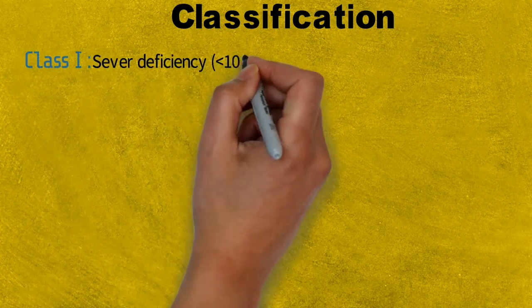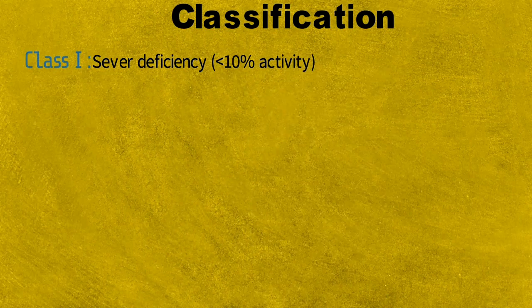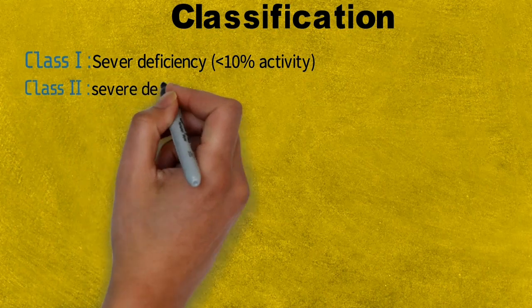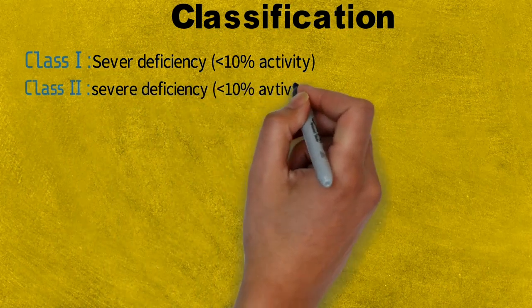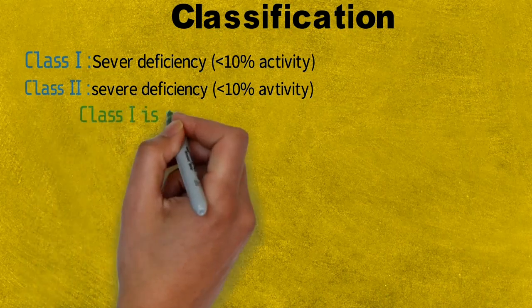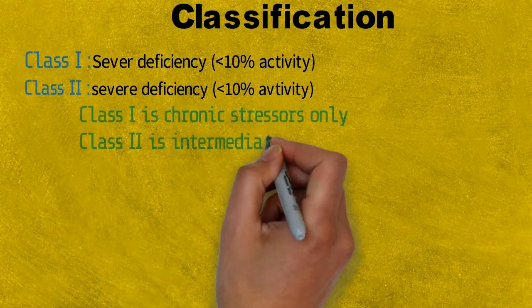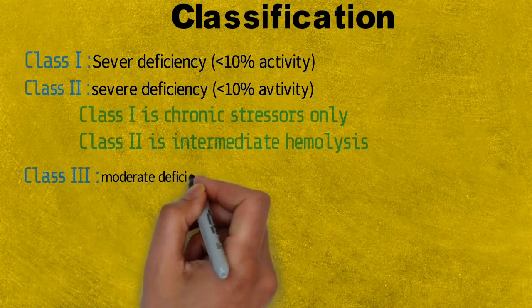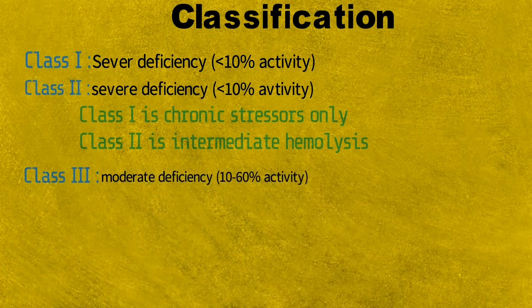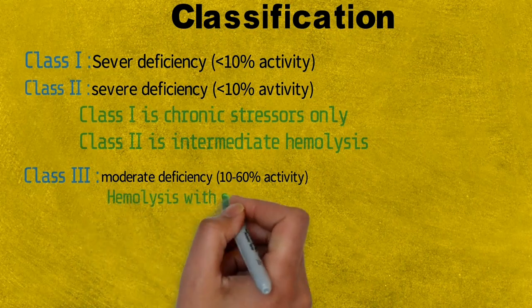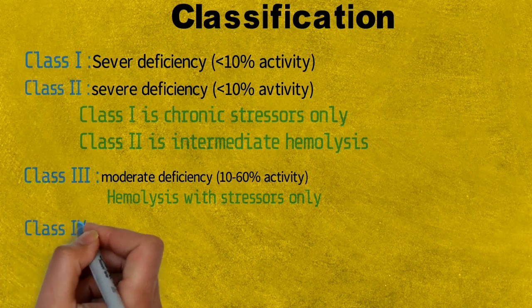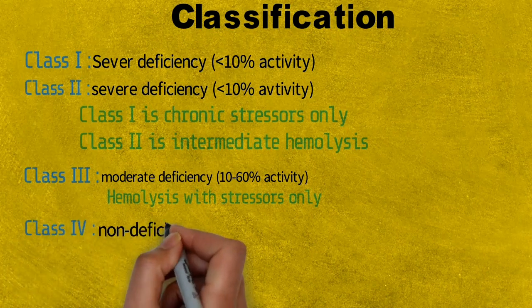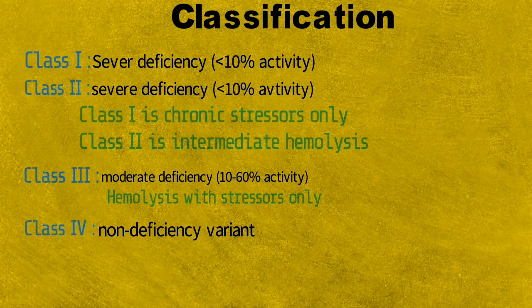Finally, the classification of G6PD deficiency has five classes. Class 1: severe deficiency, enzyme activity less than 10%, with chronic hemolysis. Class 2: severe deficiency, enzyme activity also less than 10%, but with intermittent hemolysis. Class 3: moderate deficiency, enzyme activity between 10–60%, hemolysis occurs only with stressors. Class 4: non-deficient variant. Class 5: elevated enzyme activity. In both class 4 and class 5, no clinical sequelae are seen.